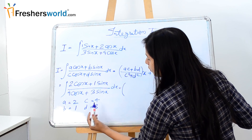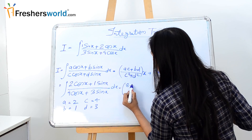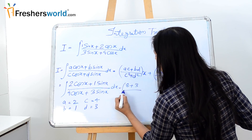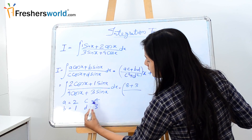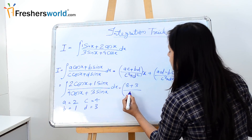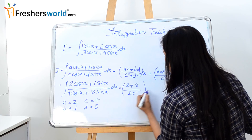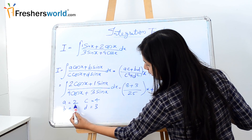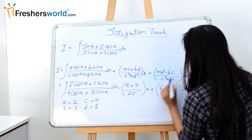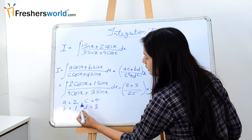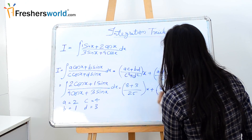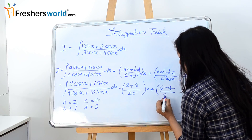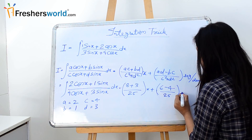So ac = 2 × 4 = 8, plus bd = b × d = 3. Then c² + d² = 4² + 3² = 25. For the log term: ad − bc = 2 × 3 − 1 × 4 = 2. And the denominator c² + d² is equal to 25.